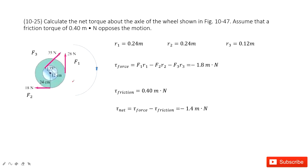In this system, you can see we have three forces acted on this wheel with different radii. F1, F2, and F3. The radius is R1, R2, R3.